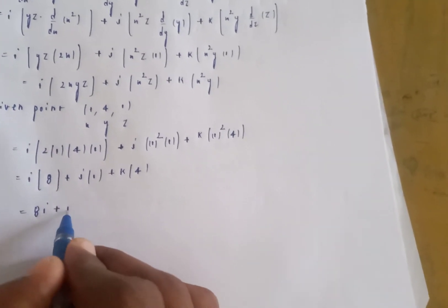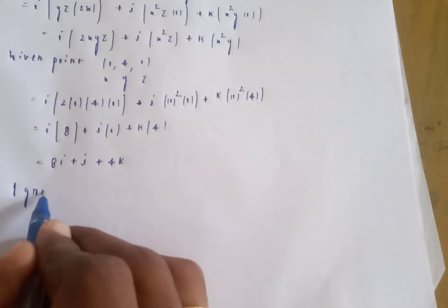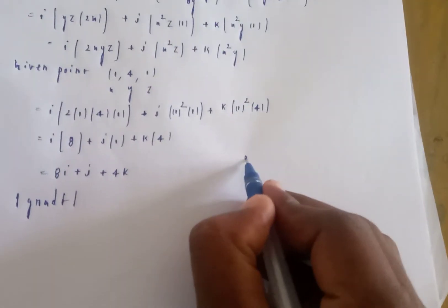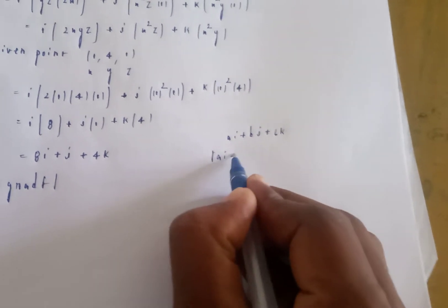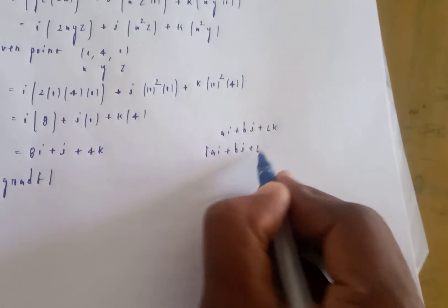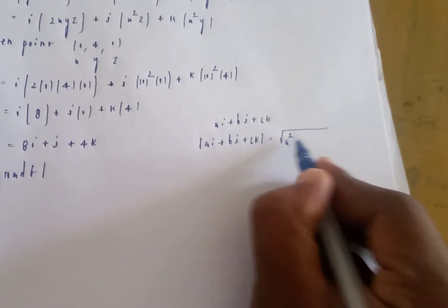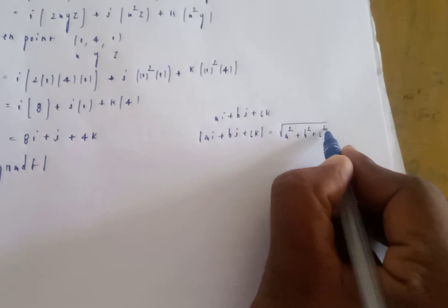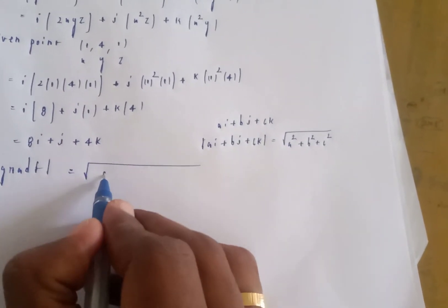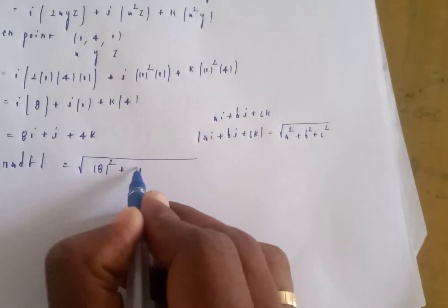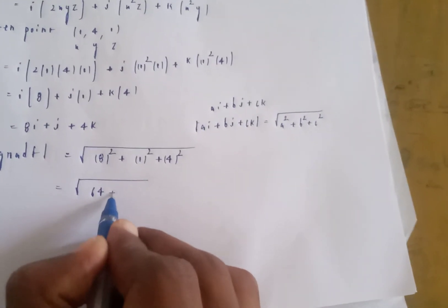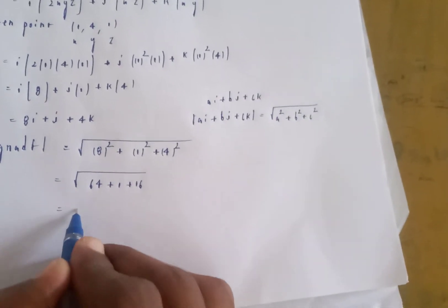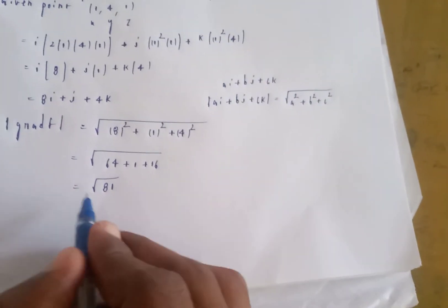The maximum value of the directional derivative equals the magnitude of the gradient. For a vector ai + bj + ck, magnitude equals root of a squared plus b squared plus c squared. So here: root of 8 squared plus 1 squared plus 4 squared equals root of 64 plus 1 plus 16 equals root of 81 equals 9.